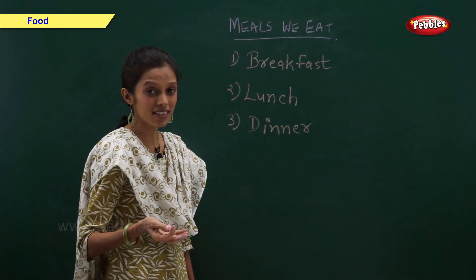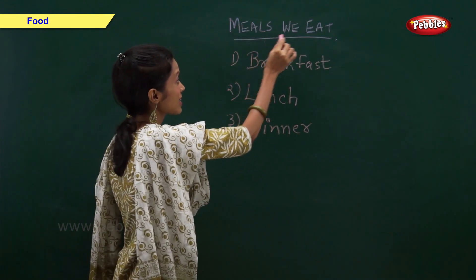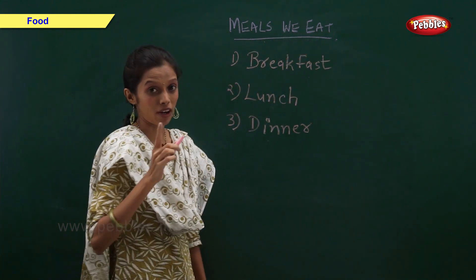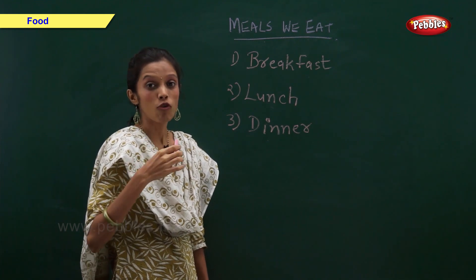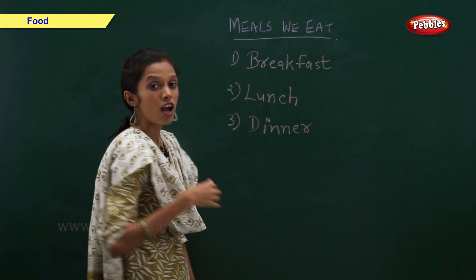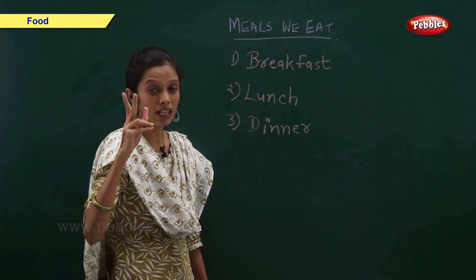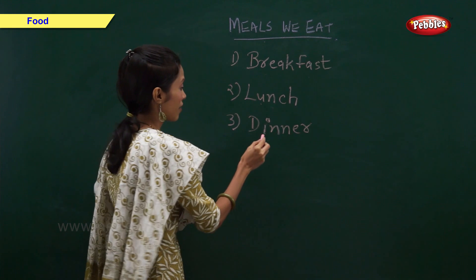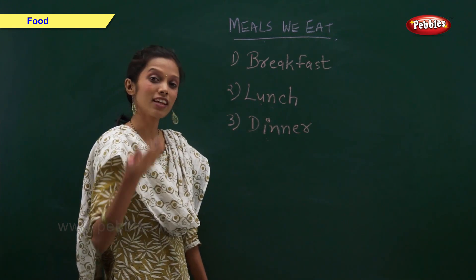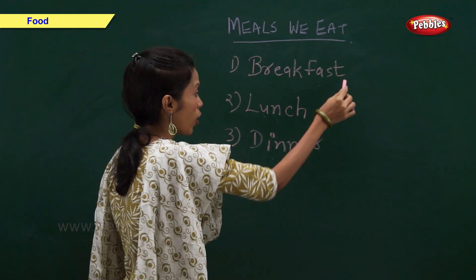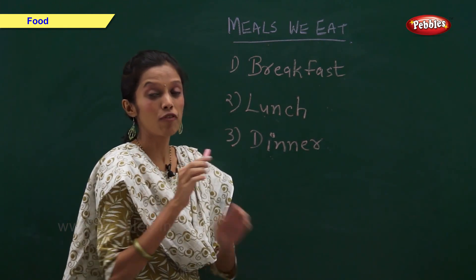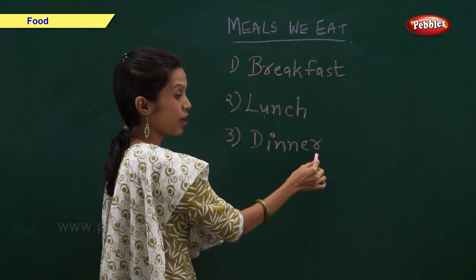Now, let us have a look at the meals we eat every day. Breakfast — breakfast is the first meal we eat in the morning. Lunch — lunch is the second meal we eat in the afternoon. Dinner — dinner is the third meal we eat in the evening. All three meals are very important for us, and we should not skip any one of them.